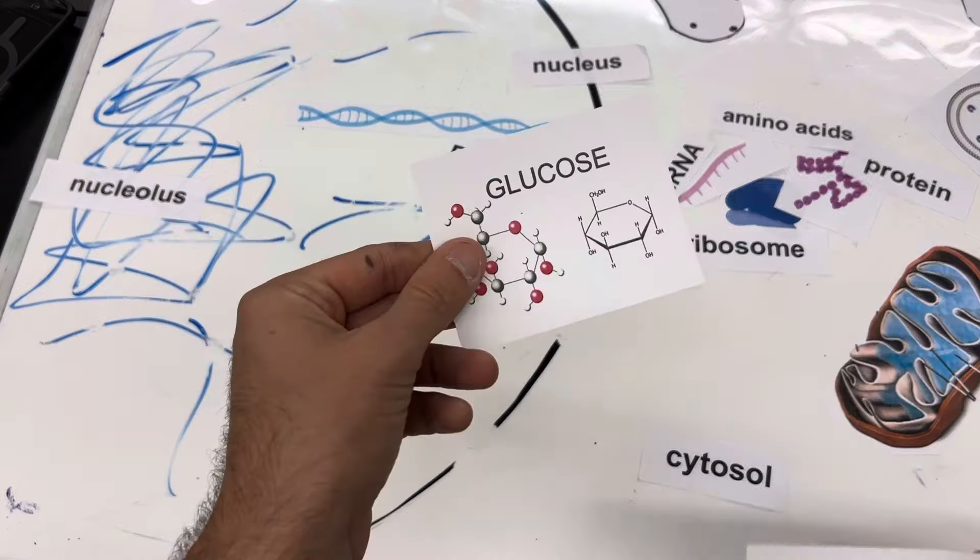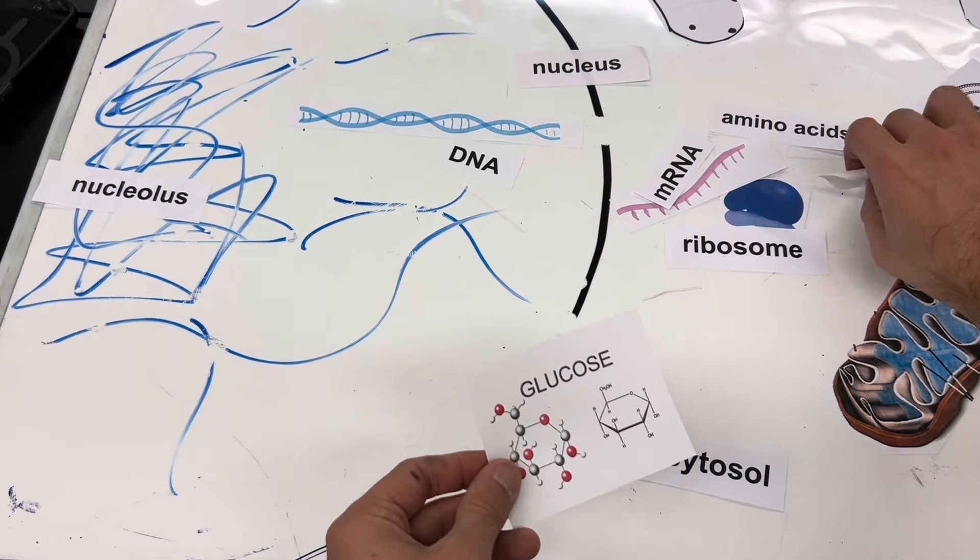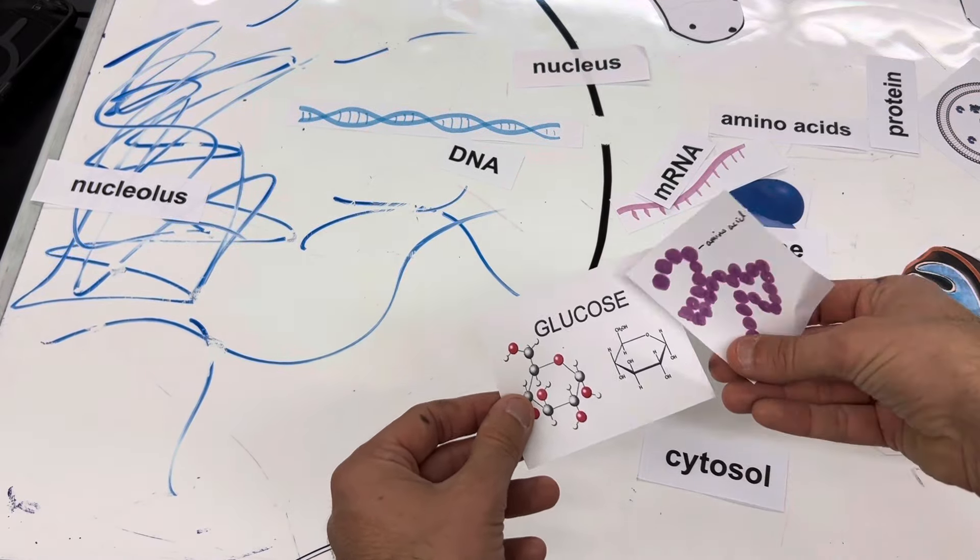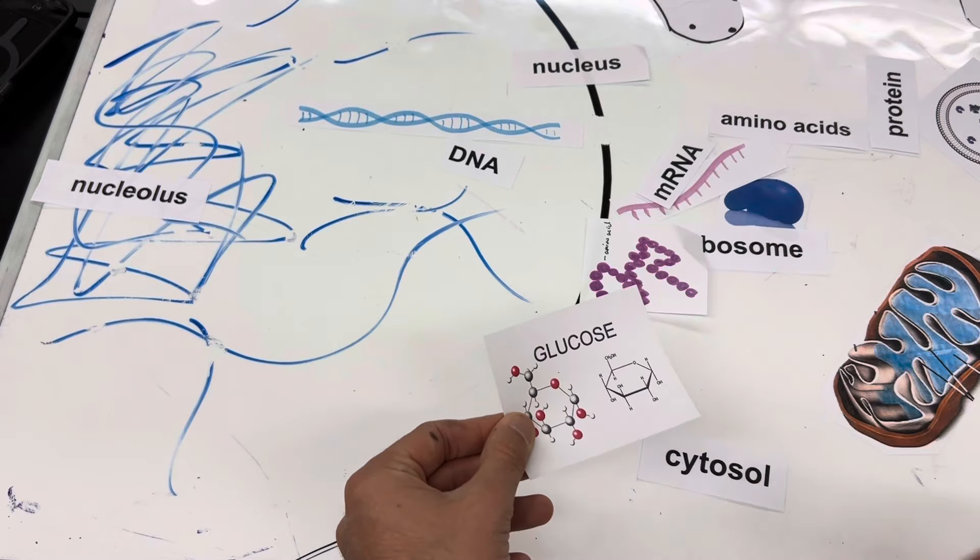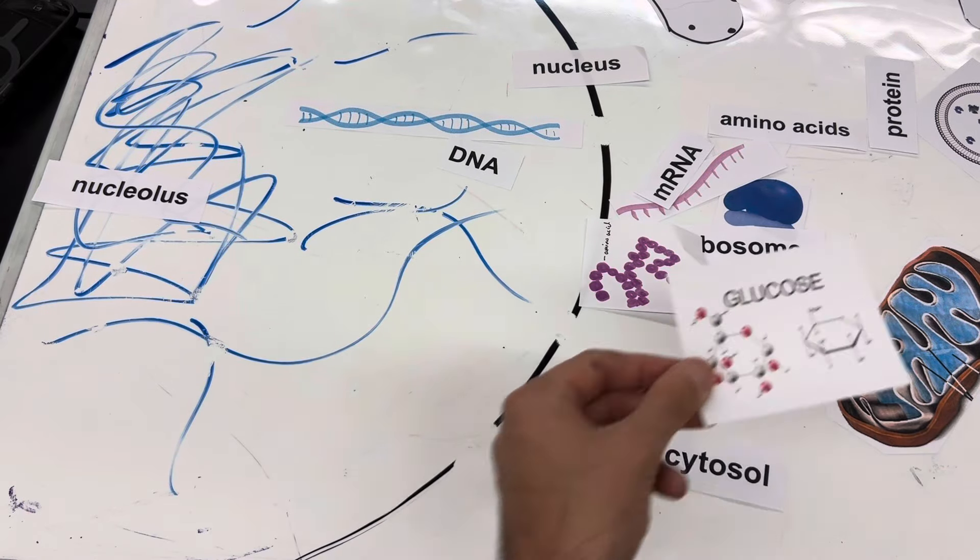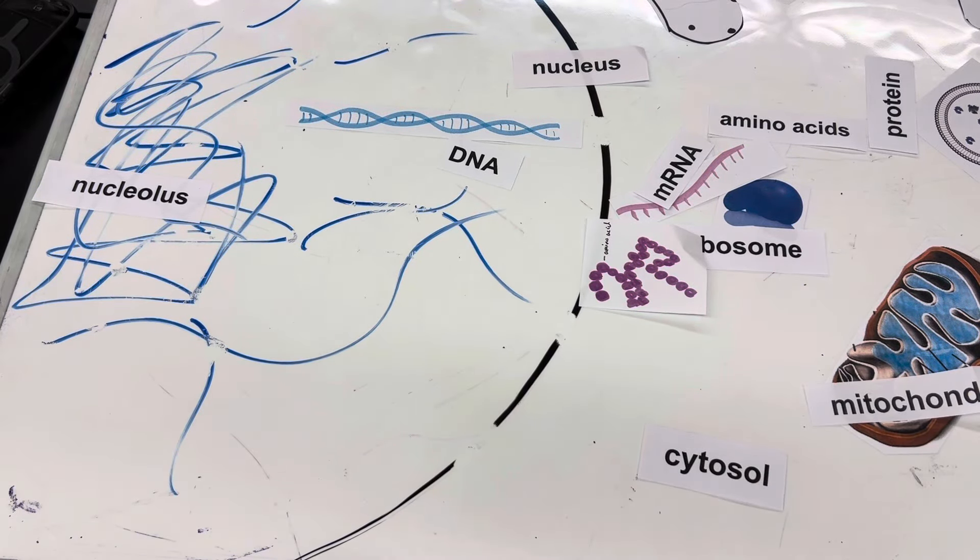So now what it could do is it can come over here, latch onto glucose, break it up a bit. That first step before glucose eventually heads to the mitochondria to really get broken down for energy.